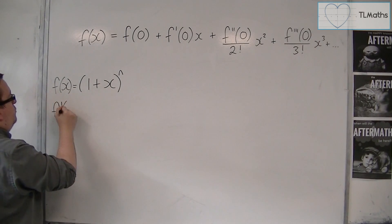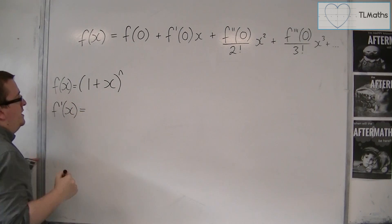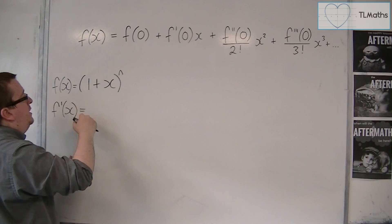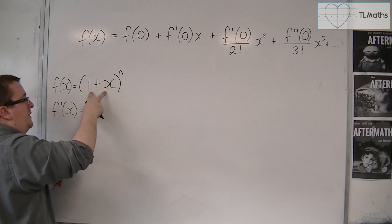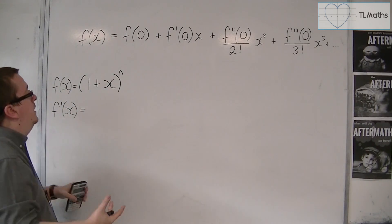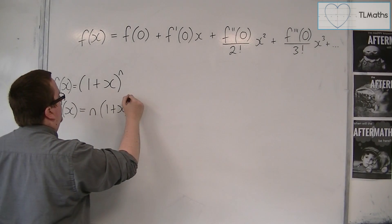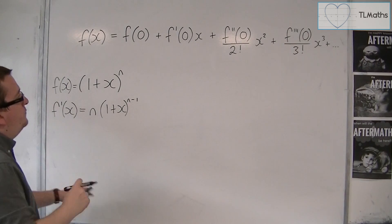So if this is my f of x, then f prime of x is the first derivative. So the power comes down to the front. The derivative of what's inside comes outside. Thankfully the derivative of inside is 1. So we're going to have n, 1 plus x to the n minus 1.